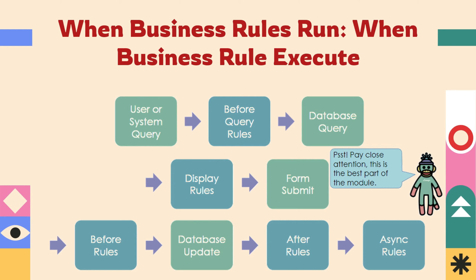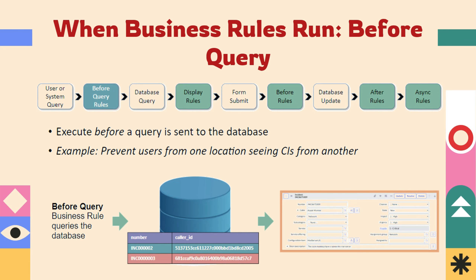When a business rule runs on before query, it executes whenever we are requesting any data from the database — specifically when a query is sent to the database. It will display all the data we are requesting. For example, we can prevent users from one location seeing CIs from another location. This is one example of how a before query business rule queries the database.